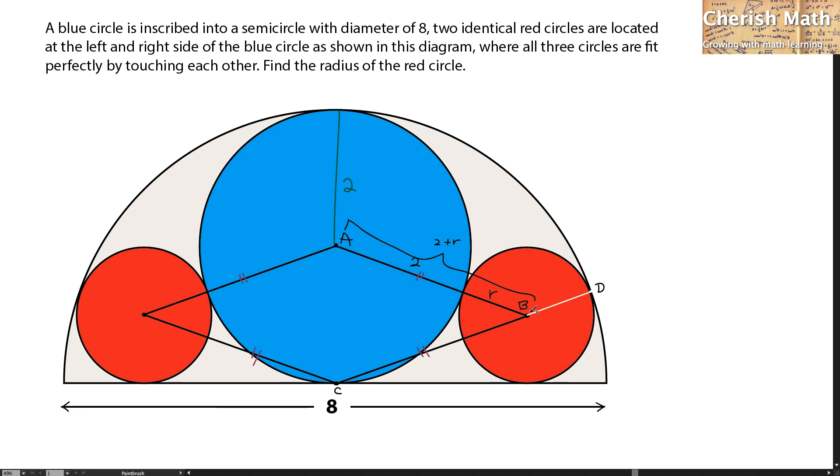And now, BD is the radius of the red circle. While CB, this length is the same as the entire radius of the semicircle, which is four units, minus the distance from B to D, and that is R.